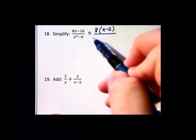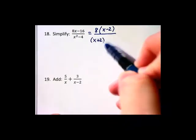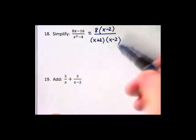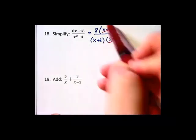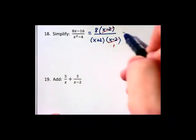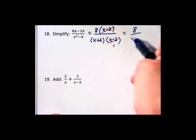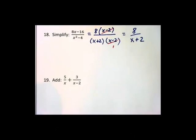And in the denominator we can do the difference of two squares. And then we can see that there's a common factor of x minus 2 that can be divided out of both the numerator and denominator, leaving us with 8 over x plus 2 as the simplified form.